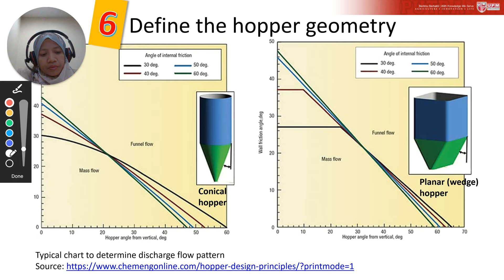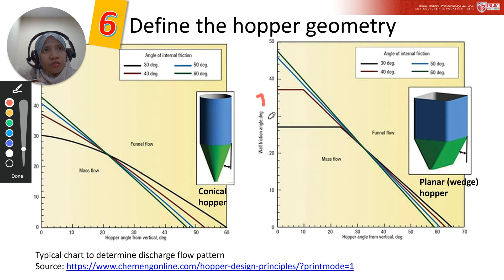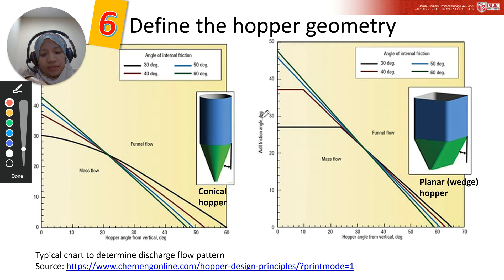The wall friction angle data is obtained from powder testing. The powder is tested at various wall surfaces such as carbon steel, stainless steel, plastic, and abrasion-resistant liner. The testing is based on ASTM standard test method D6128. Depending on the combination of hopper angle and wall friction angle, we can determine either mass flow or funnel flow discharge.